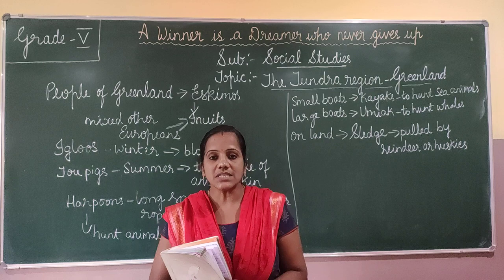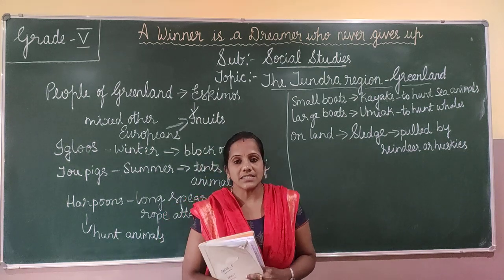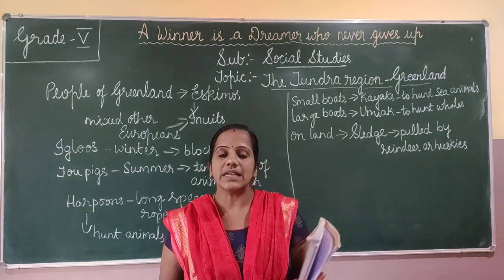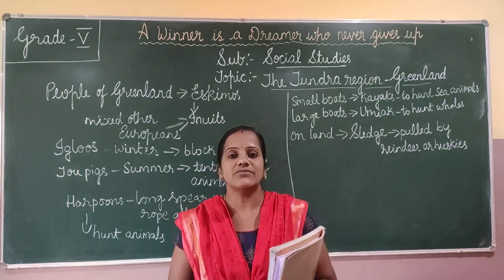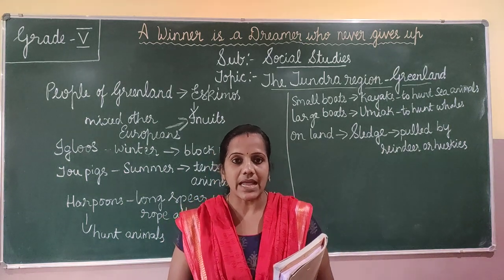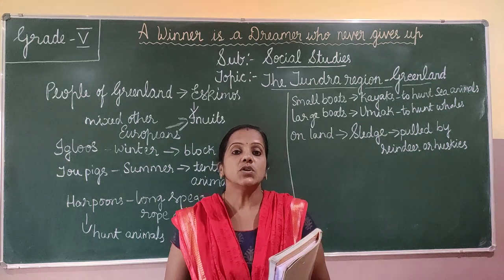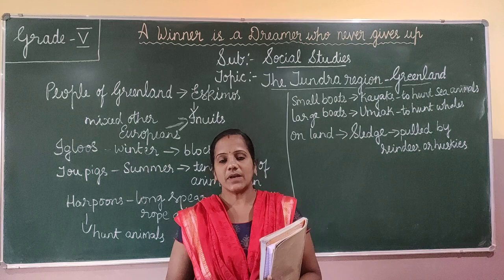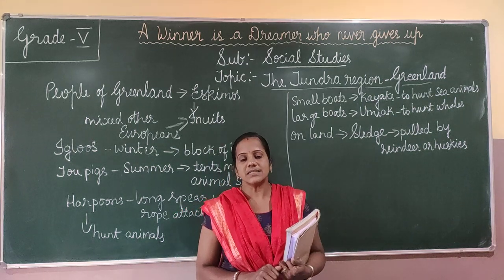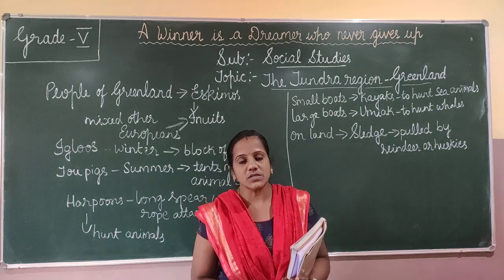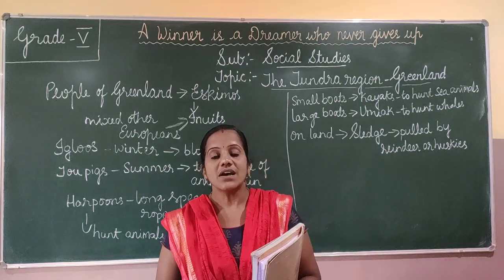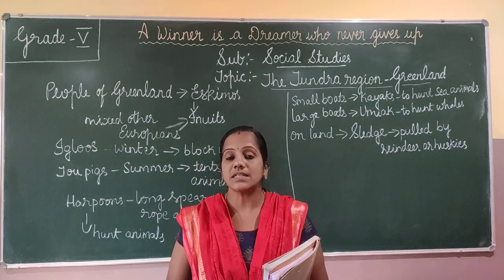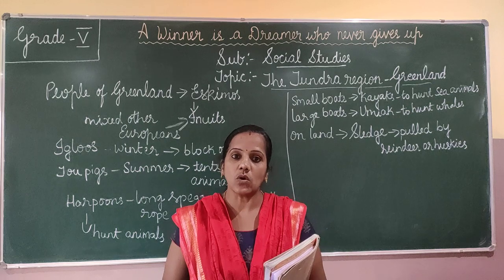This Greenland is the largest island in the world, and the name Greenland was given by the European explorer Eric the Red. This frigid zone is far away from the equator, so these areas — the Tundra region — are very cold.